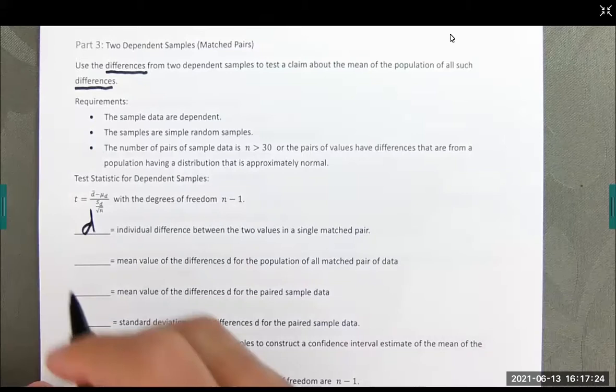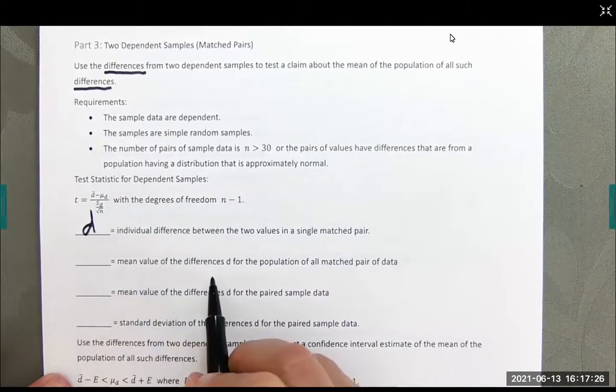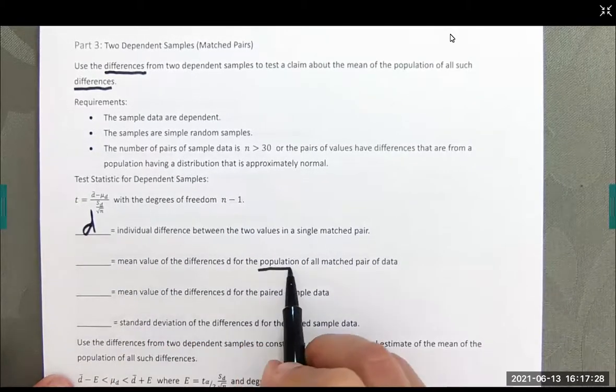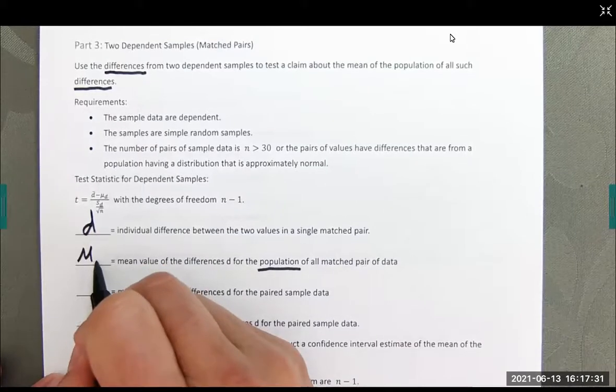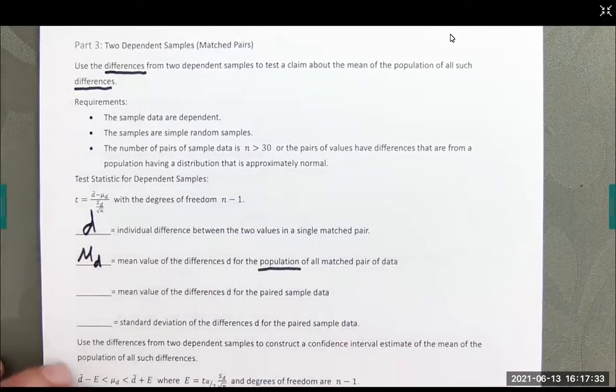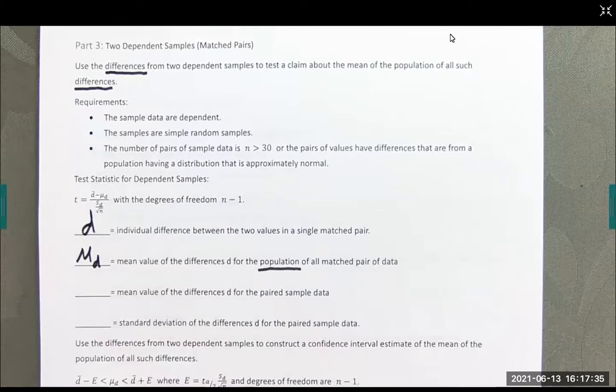Next up, we have the mean value for the differences for the population, which means we're using Greek mu sub D. That's the population difference mean.